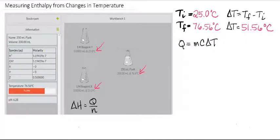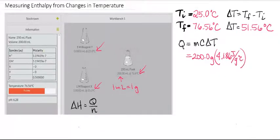We can plug that in to solve for Q. We need to remember that this volume of 200 milliliters is going to be the mass of our water because water has a density of 1. Therefore, 1 milliliter of water equals 1 gram of water. So if you have 200 milliliters, you have 200 grams. And then we'll use the specific heat of water, which is 4.186 joules per gram degrees C, and our delta T of 51.56 degrees C.